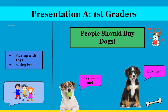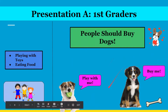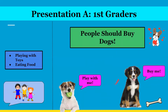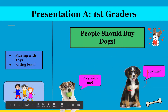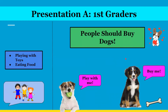So here's presentation A. We know our first graders like playing with toys and eating food — that's what they have in common with dogs. Notice that we have not many words but more pictures for them. We want them to think of dogs as cute. So we want our first graders to want dogs because they're cute and they play with toys and they eat food. They have commonalities — toys and food — and dogs are also very cute, which is a perfect reason for why a first grader might want a dog.